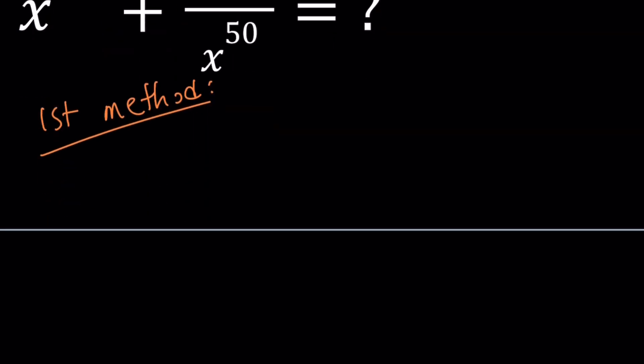For my first method, I'm going to go ahead and solve for x. If we multiply everything by x, we get x squared plus 1 equals square root of 3x.